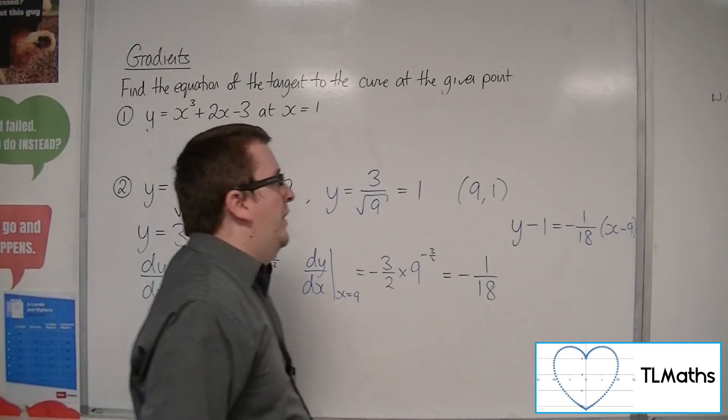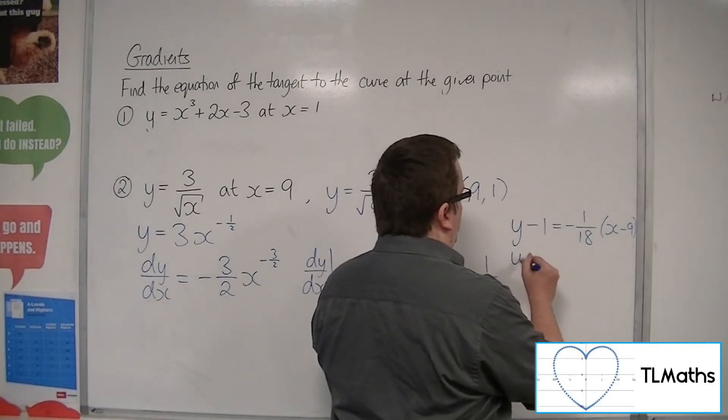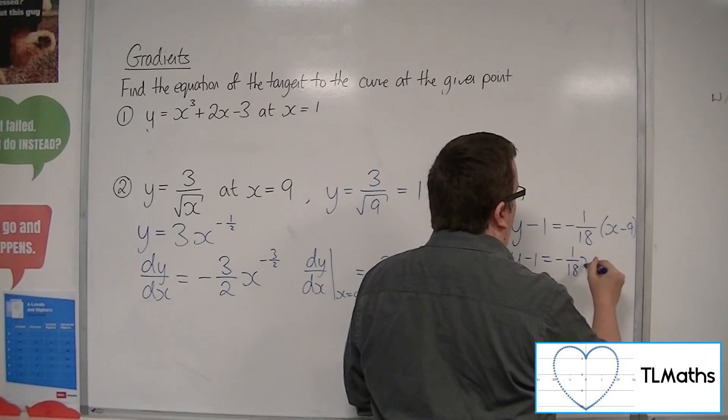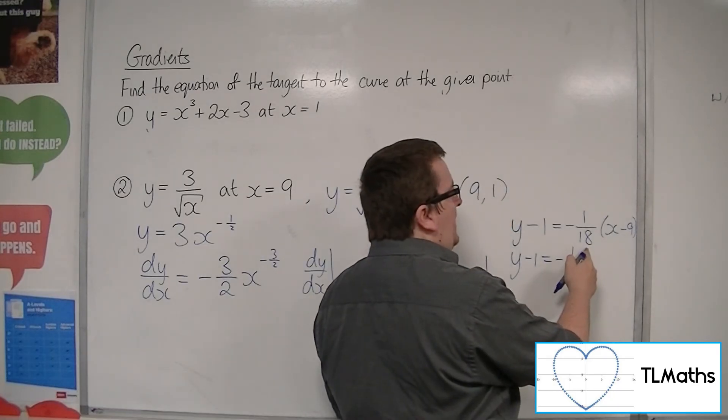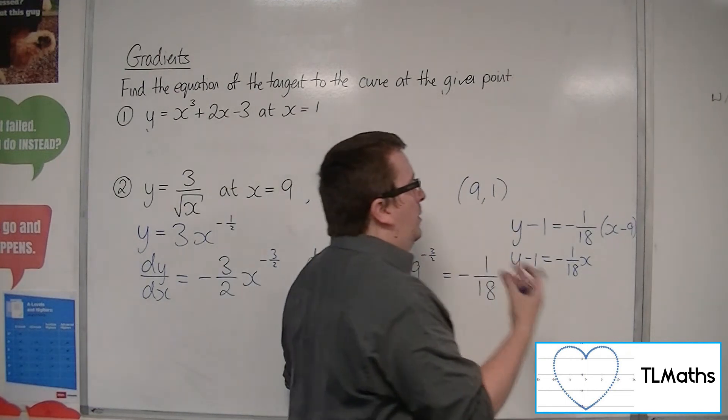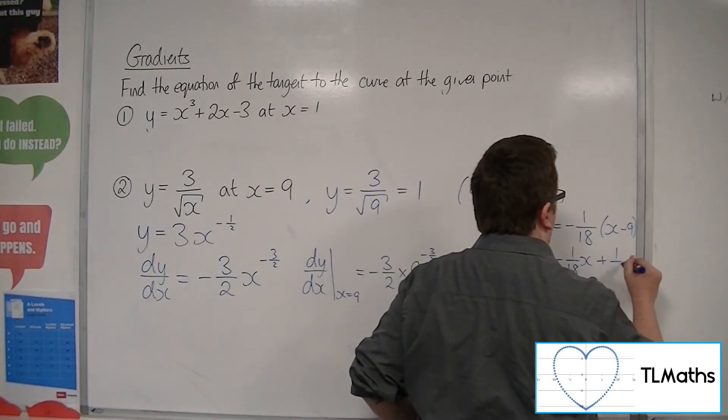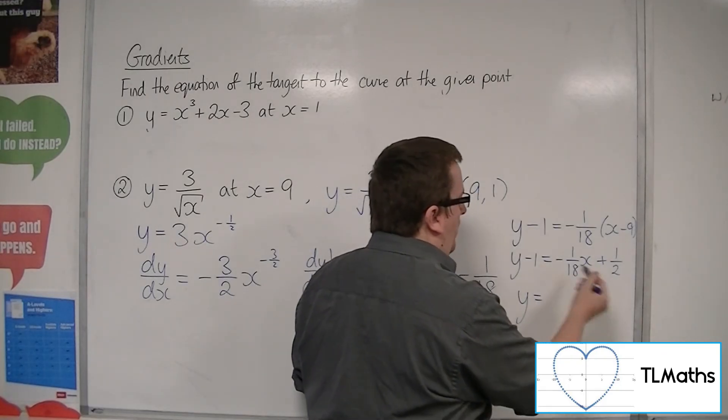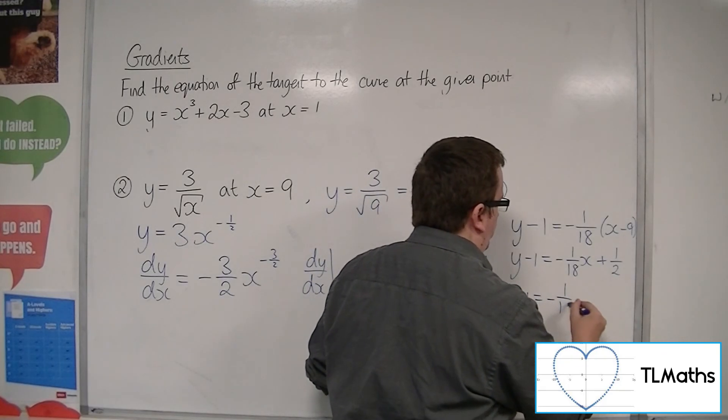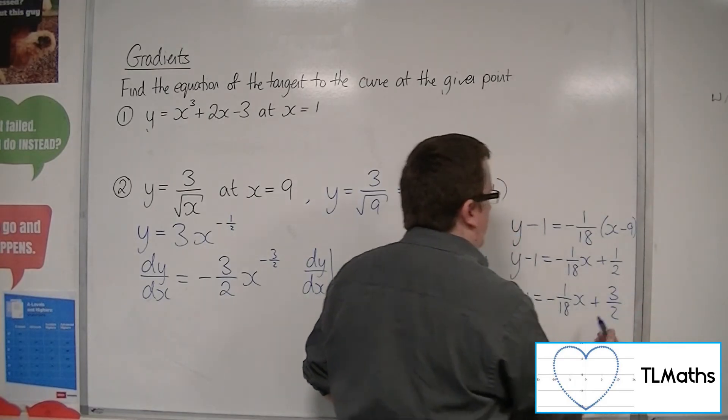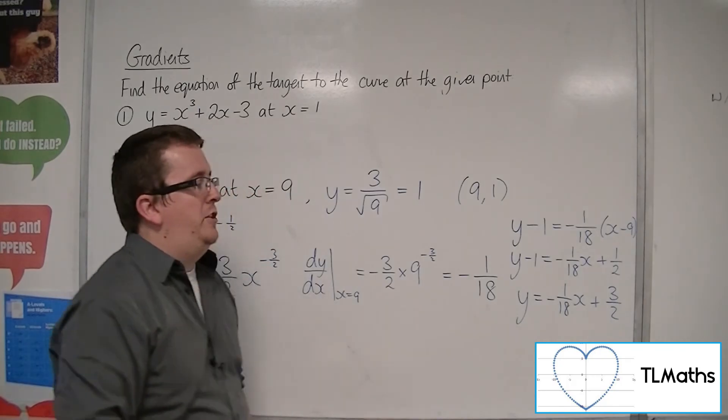Now we want to tidy that up. So if I multiply out that bracket, we get minus 1 18th x minus 1 over 18 times by minus 9 is plus 1 half. And then I want to add the 1 to both sides. And so that is the equation of the tangent line, y equals minus 1 18th x plus 3 halves.